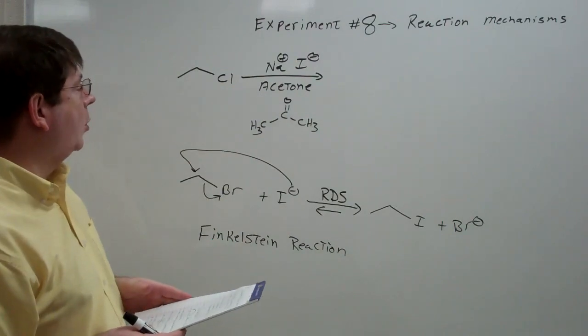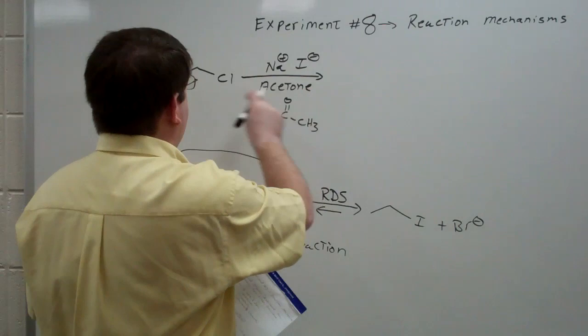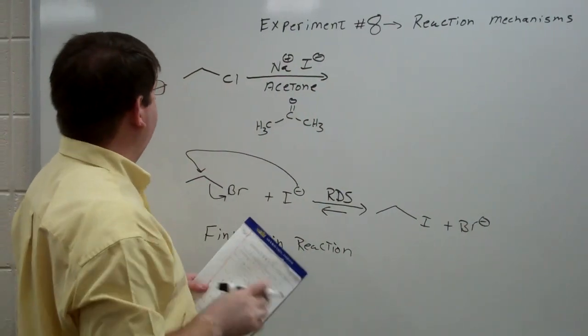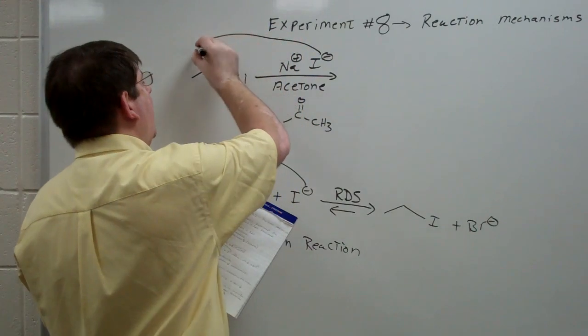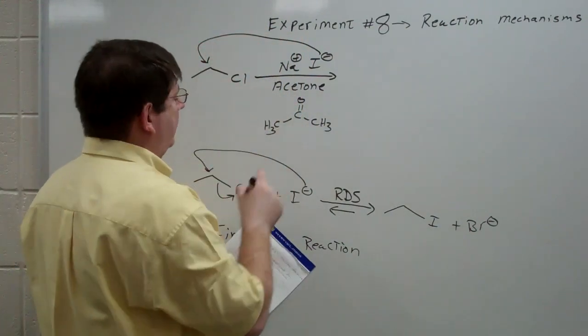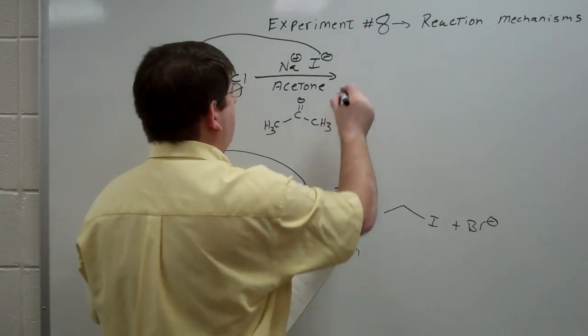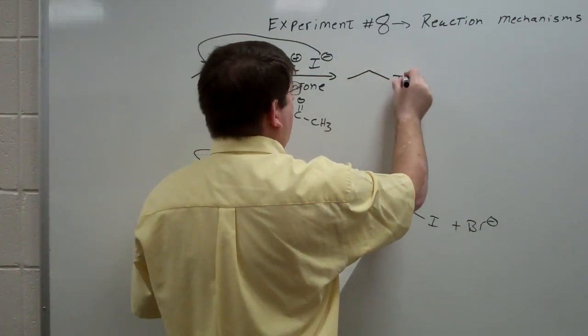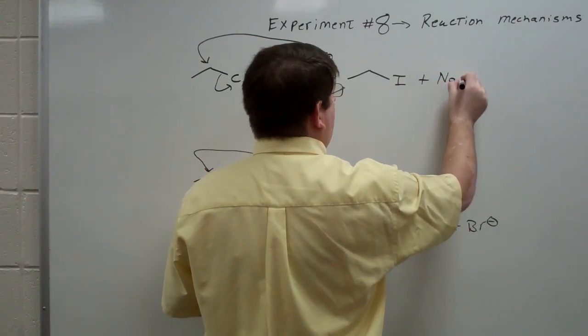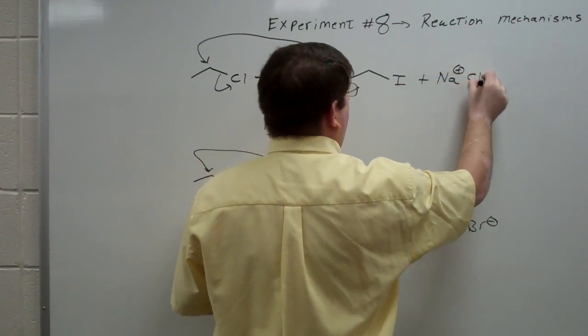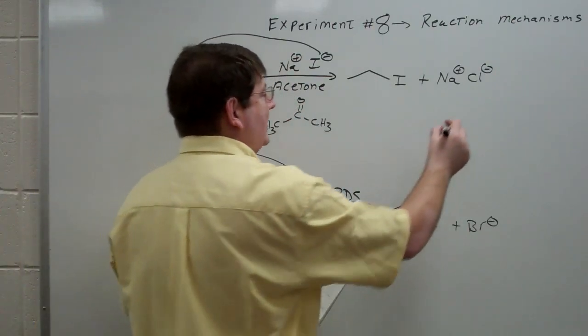So we can get the sodium iodide into solution. We add the chloroethane. The iodide, of course, will function as a nucleophile just like it did down here. The chloride will be a good leaving group.